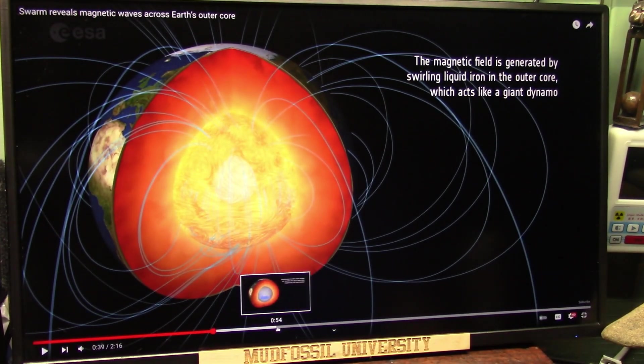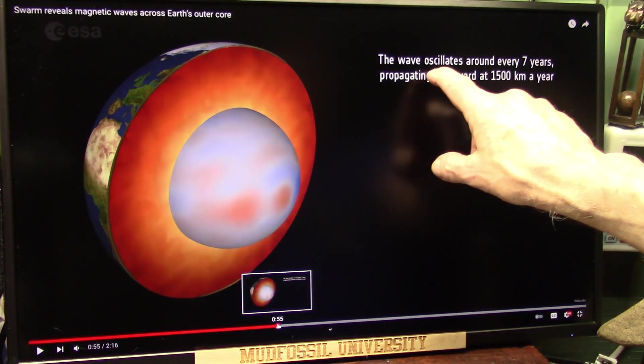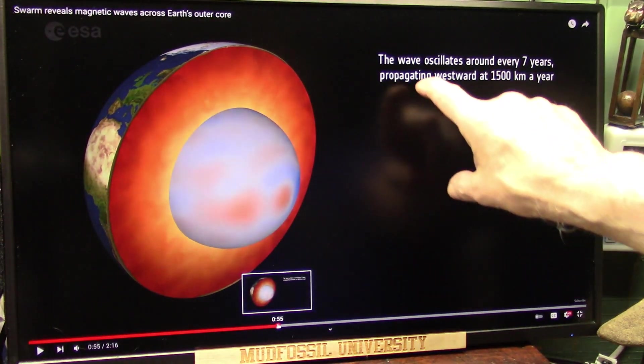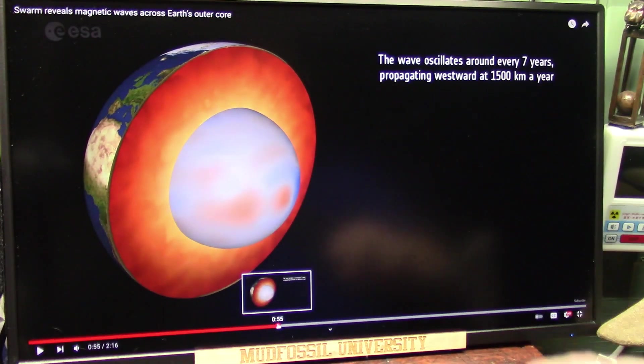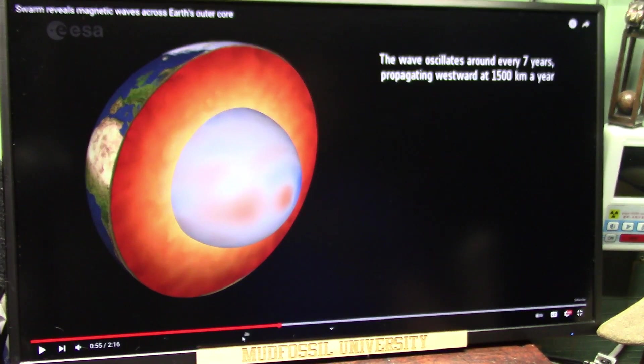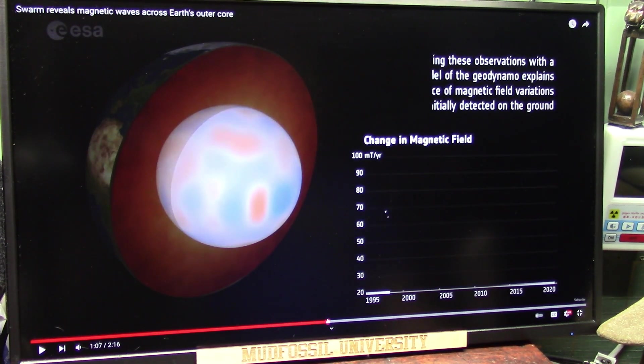There is no iron core in the Earth that they can verify is there. Wave oscillates around every seven years, causing this propagation westward 1,500 kilometers a year. The fields are switching and changing due to our scrubbing through space.